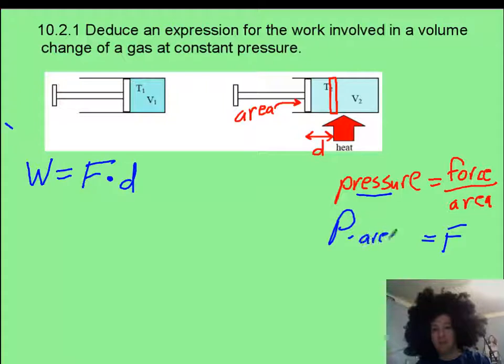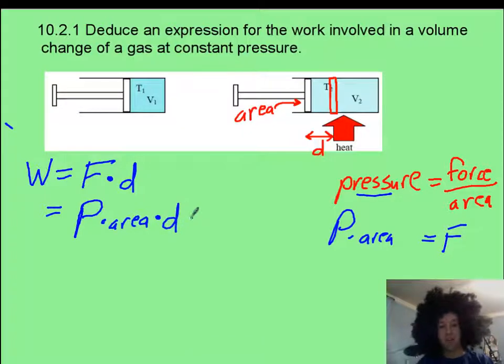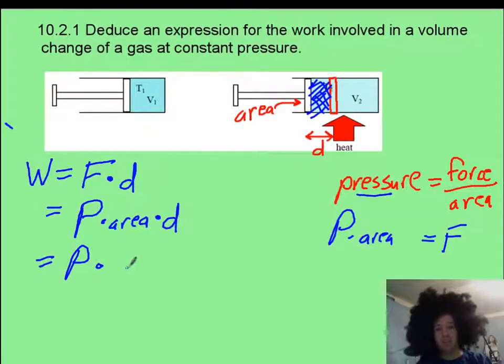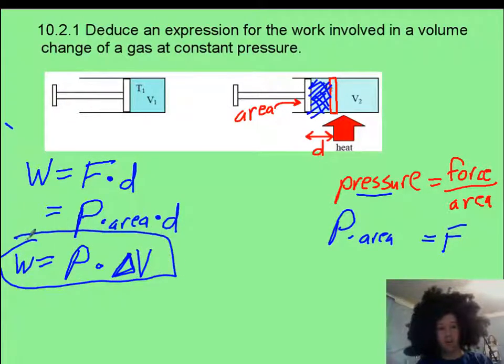If you rearrange, F is going to be P times area. So now, this equation becomes pressure times the area of the piston times the distance that it moves, which I'm going to call D. Now, that can be changed to this extra space here, that's the extra volume. So, area of the piston times the distance it moves, that is our change in volume. And that is our work equation for an expanding gas. Positive if it's expanding, negative if we are contracting it with our awesome muscles.